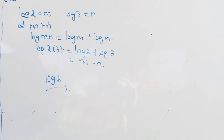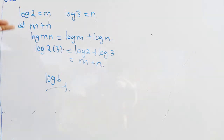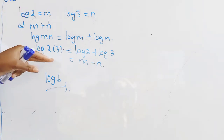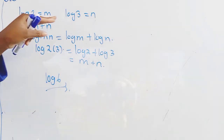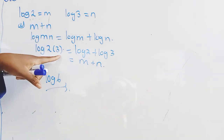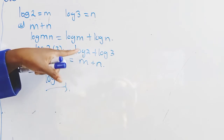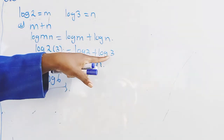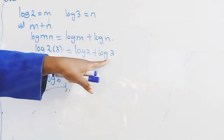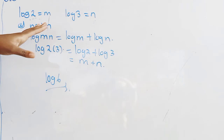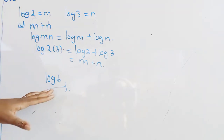To explain again: logarithm of mn, where m and n can be any numbers, simply means log m plus log n — that's law number one. With the information given, logarithm of 2 times 3 becomes logarithm of 2 plus logarithm of 3. Logarithm of 2 is m and logarithm of 3 is n, so m plus n as a single logarithm is log 6.